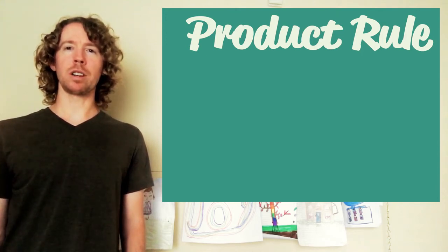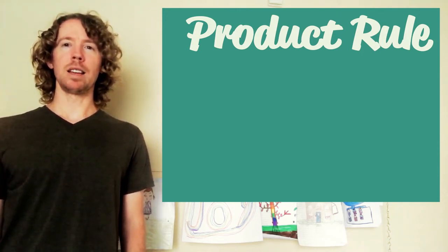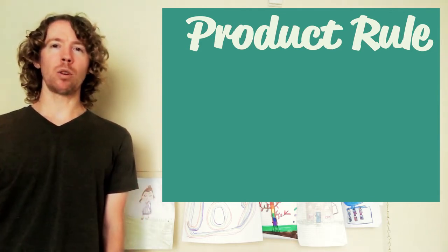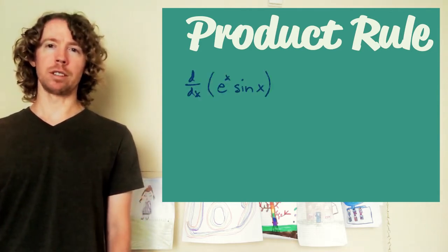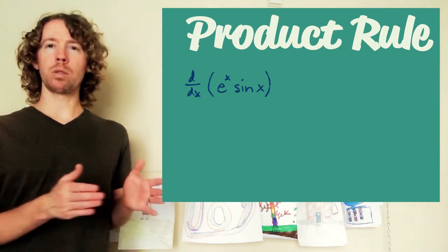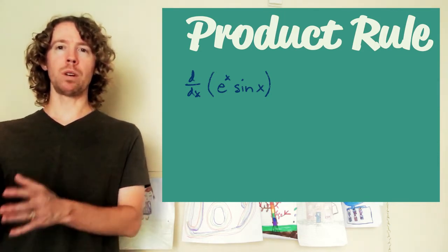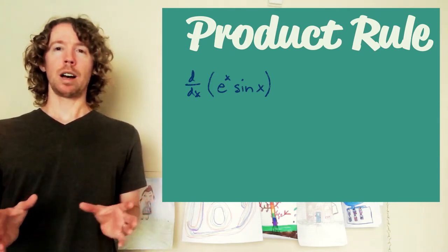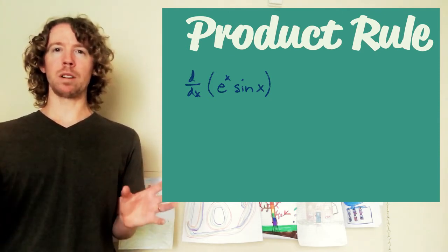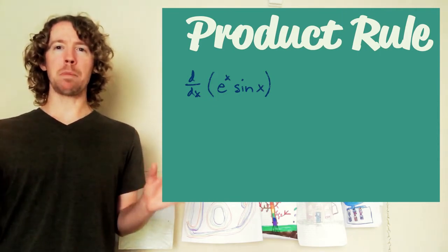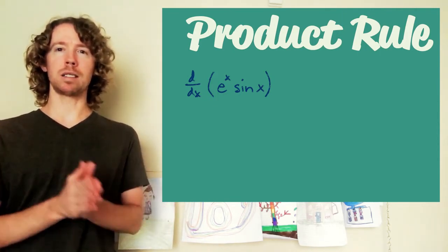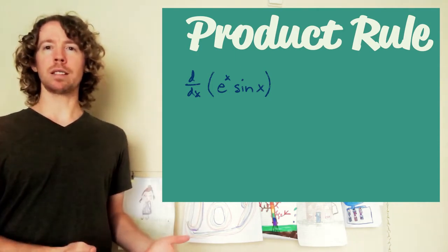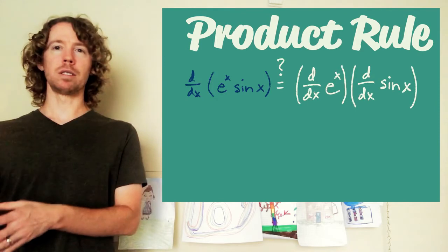One function that's really important in certain applications of math is e to the x times sine of x. I would really like to know what the derivative of this function is. If I know the derivative of e to the x and the derivative of sine of x — which I do, they're both fairly simple — my hypothesis is that the derivative of e to the x times sine of x will just equal the derivative of e to the x times the derivative of sine of x.